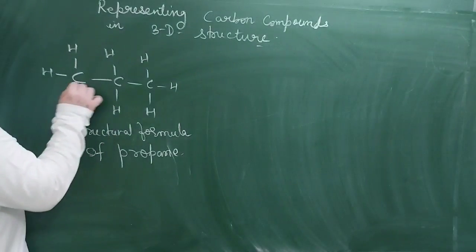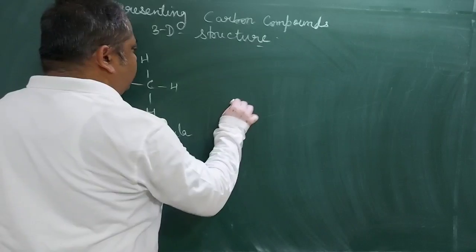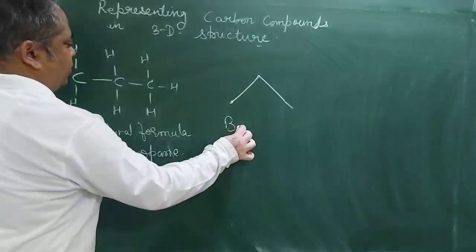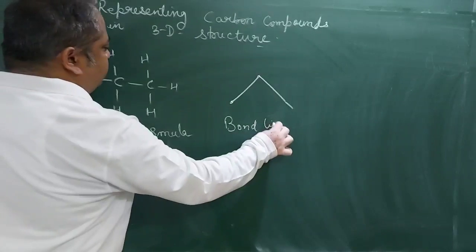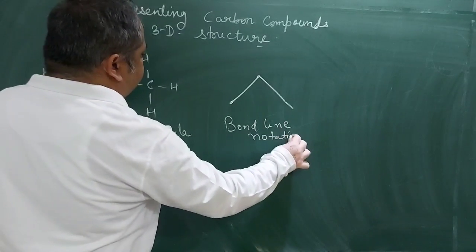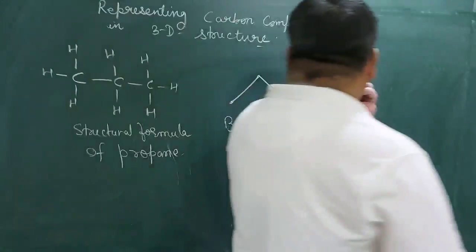In bond line notation we can also write it as one, two, three. So you can simply write it as one, two, and three. It is called bond line notation. Its orbital picture will be like this.